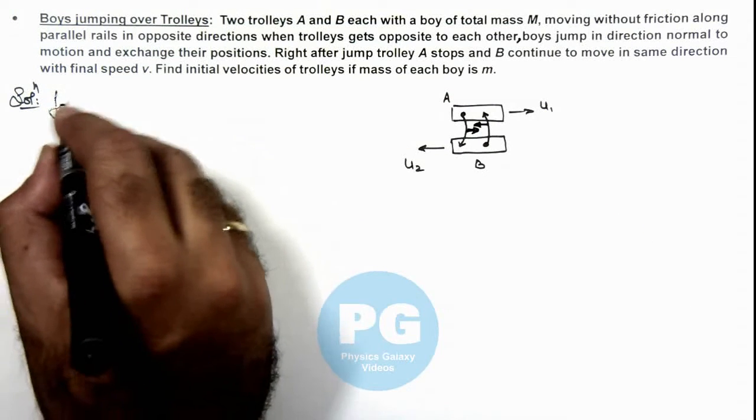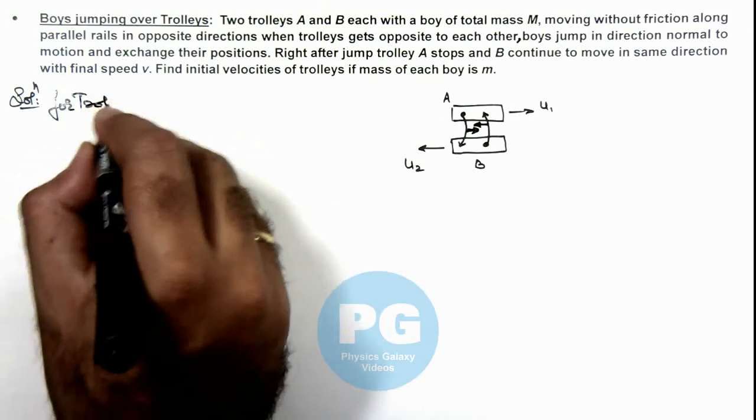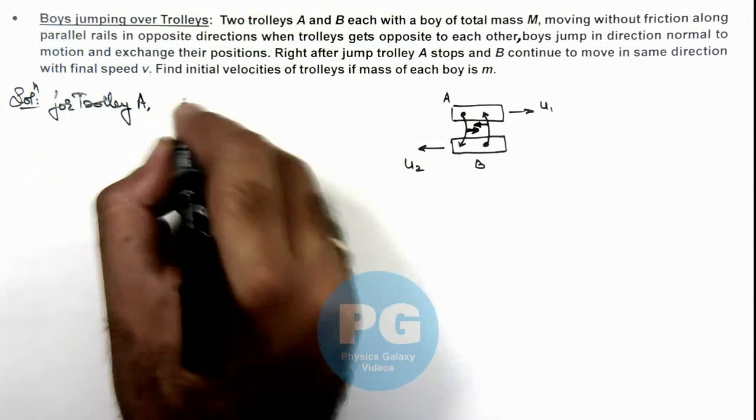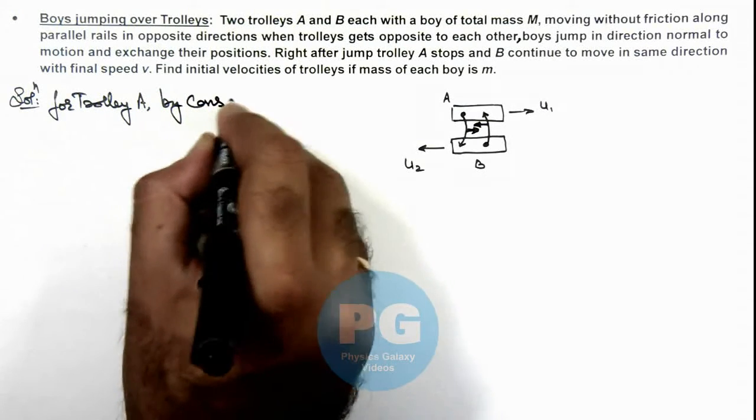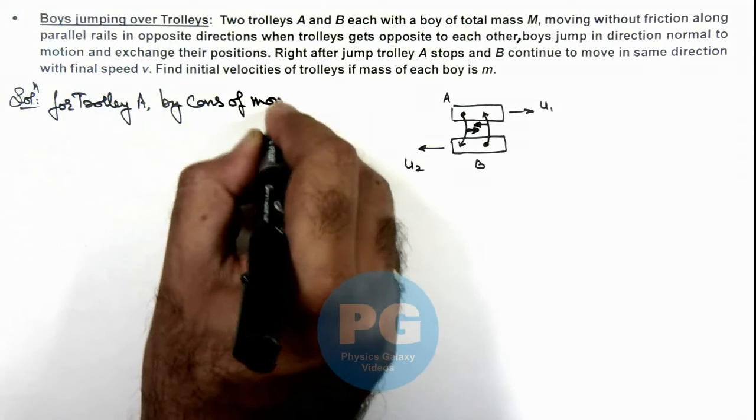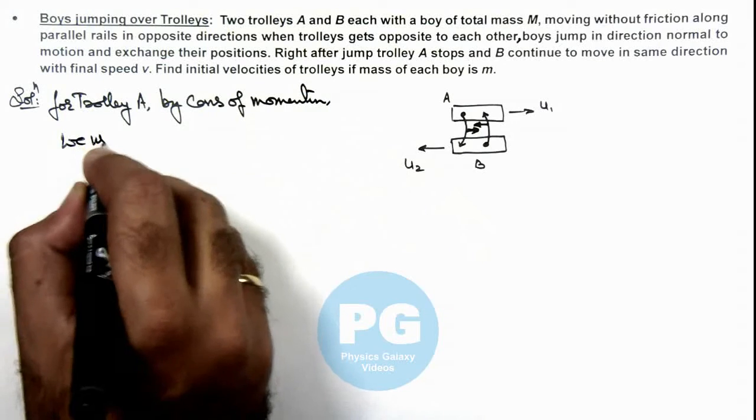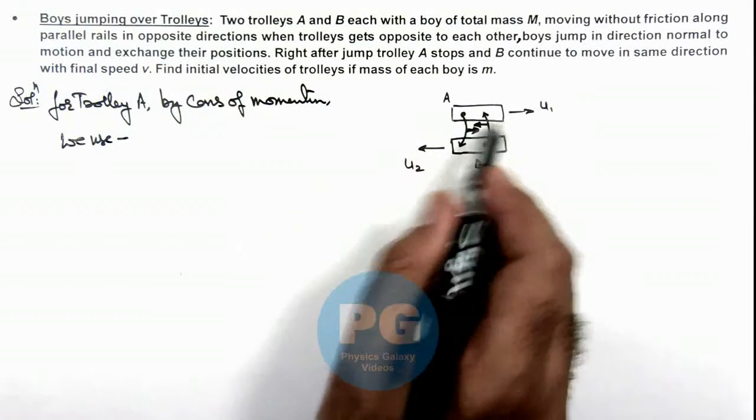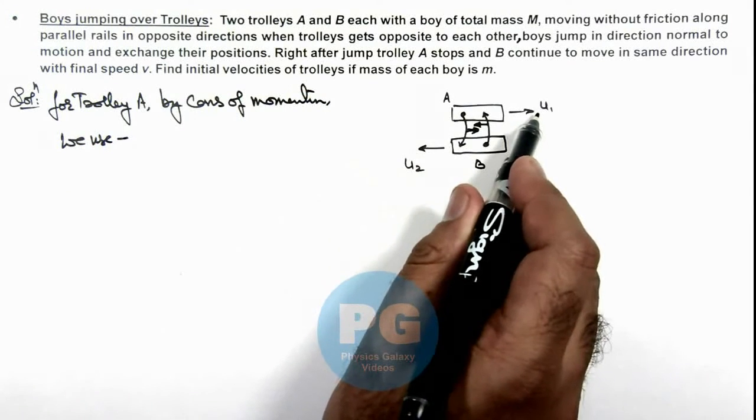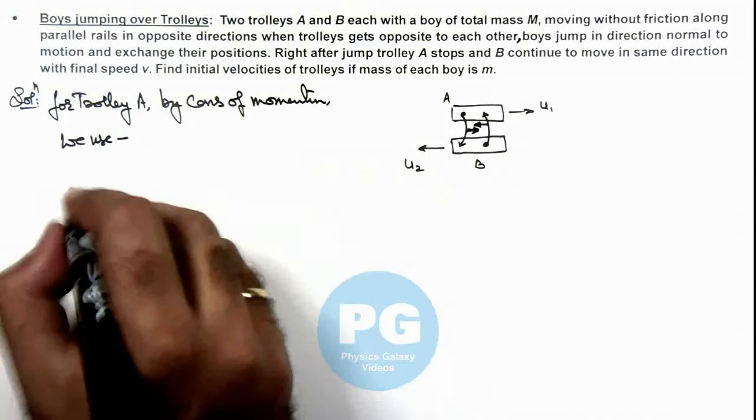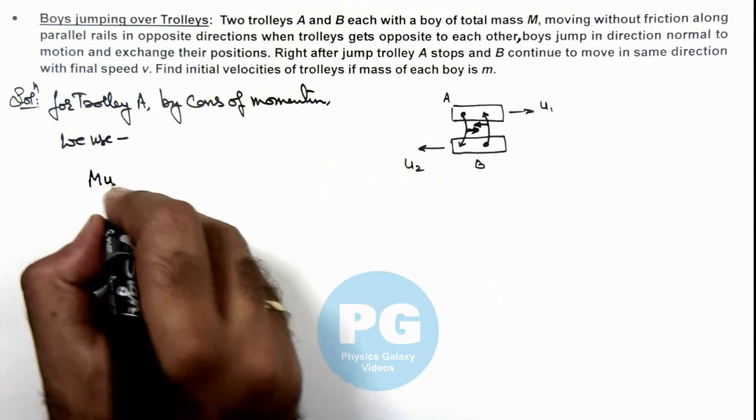For trolley A, by conservation of momentum, here we use: you can see A is moving with initial speed u1, so we can write its momentum was M·u1 with the boy.